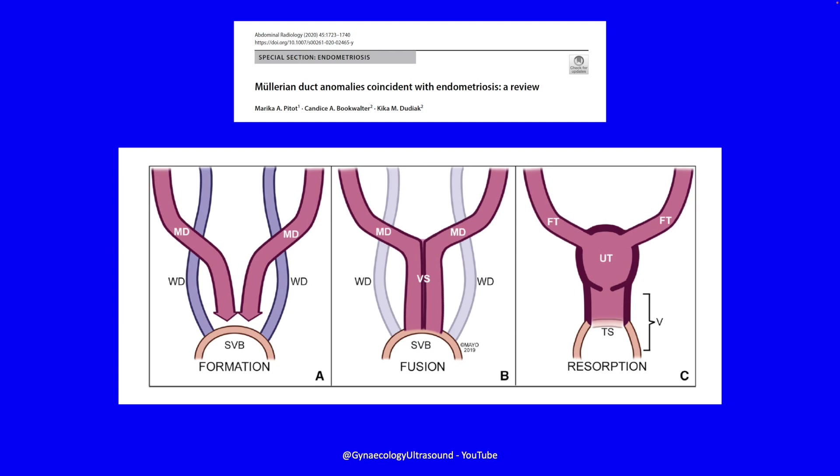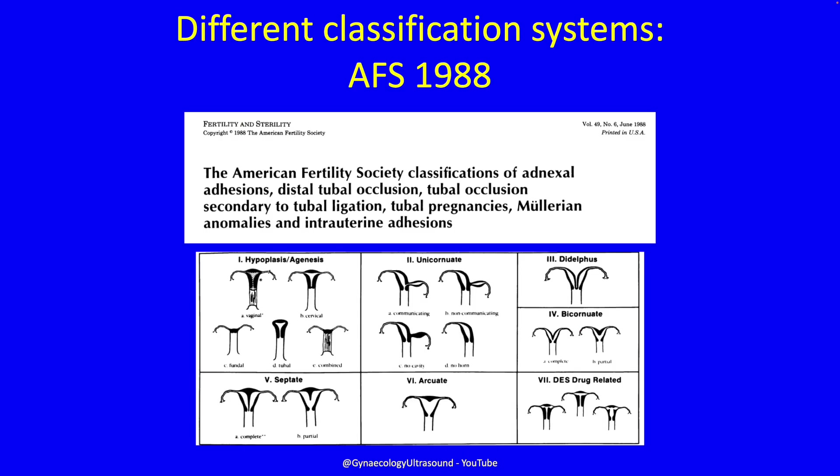Just to take a step back — embryology. How do you get these Müllerian abnormalities? In the beginning, Müllerian ducts are formed. Then they move together and fuse, and then the septum between them is absorbed, creating a uterus and a vagina. Things go wrong at different stages.